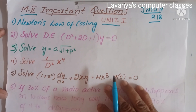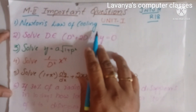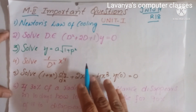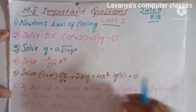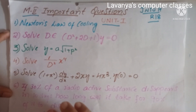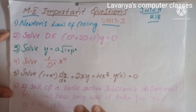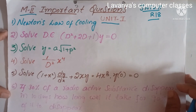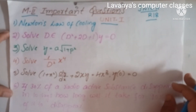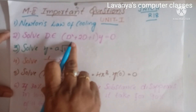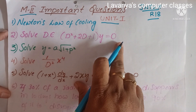Read these questions very well and get a good score in M2. Unit one — the first question is Newton's Law of Cooling. These are the important questions. Sometimes the numbering or figures will be changed but the pattern is the same, so don't concentrate on the numbers or figures, just concentrate on the method or model — how to solve it. For example: solve d squared plus 2d plus 1 into y equals 0.